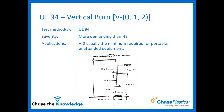Next, your vertical burns — V0, V1, V2 — are more demanding than HB. V2 is the minimum required for portable unattended equipment. As you start requiring more and more of the material, we have to start looking at potentially adding more flame retardant packages or additives to the material to make sure it passes. This is something we want to know ahead of time.